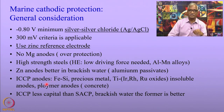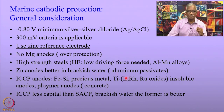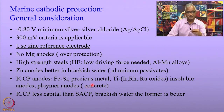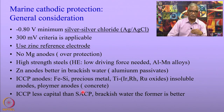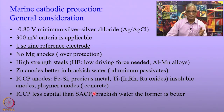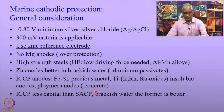If ICCP is used, iron-silicon, precious metals such as platinum, titanium insoluble anodes, or polymer anodes are used where there are concrete structures. ICCP is less capital-intensive than sacrificial anode cathodic protection systems for seawater applications because large amounts of sacrificial anodes would otherwise need to be installed. For brackish water, ICCP works better than sacrificial anode systems.